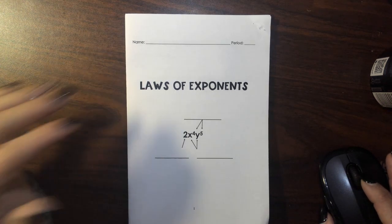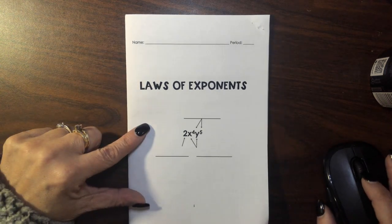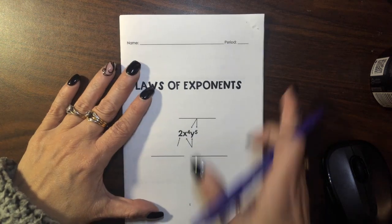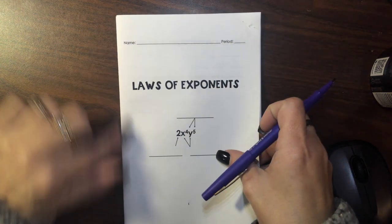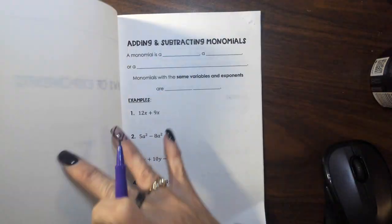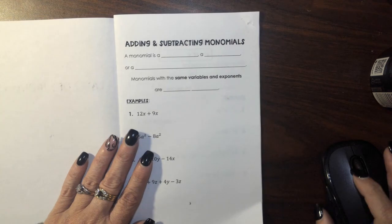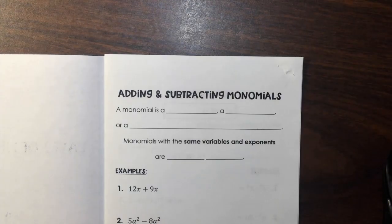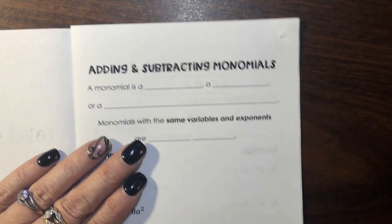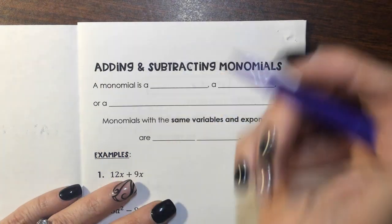Hey gang, it's time to do our laws of exponents. So you've got your booklet, you took your staple out, you folded it, you put it together, and now you're here — adding and subtracting monomials. So grab a pencil or a pen and off we will go.